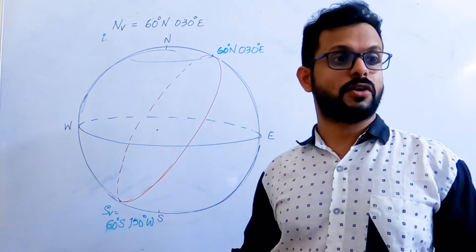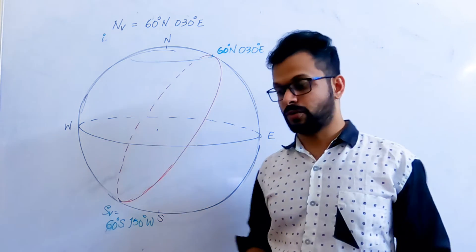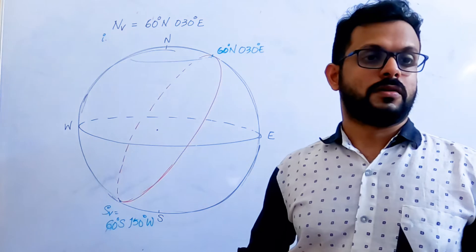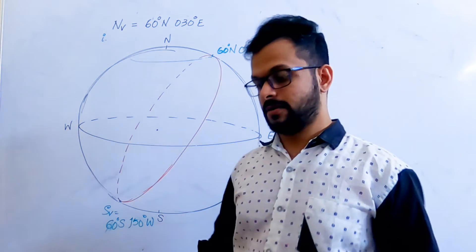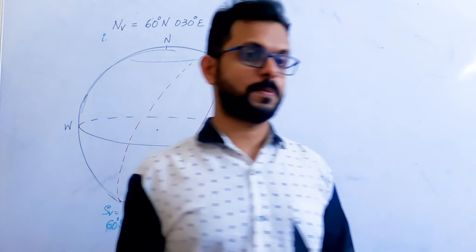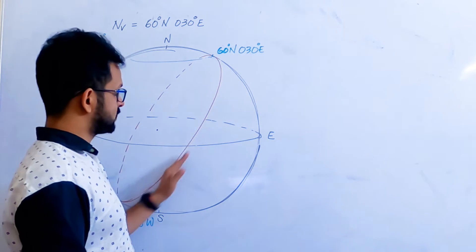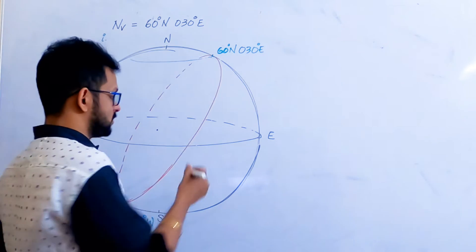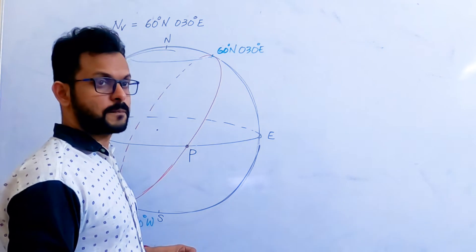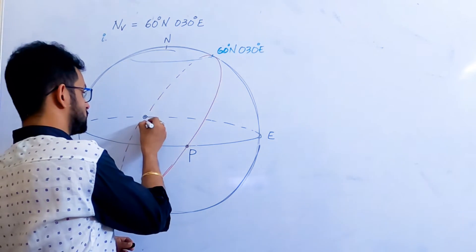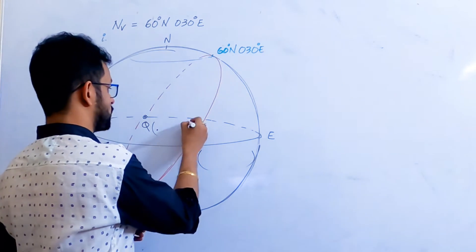Question number two: find the coordinates of the point of crossover of the great circle and the equator. We can see that the great circle is crossing the equator at some point — that is point P. Is there any other point where the great circle is crossing the equator? Yes, on the other side — that is point Q. We are asked to find the latitude and longitude of points P and Q.